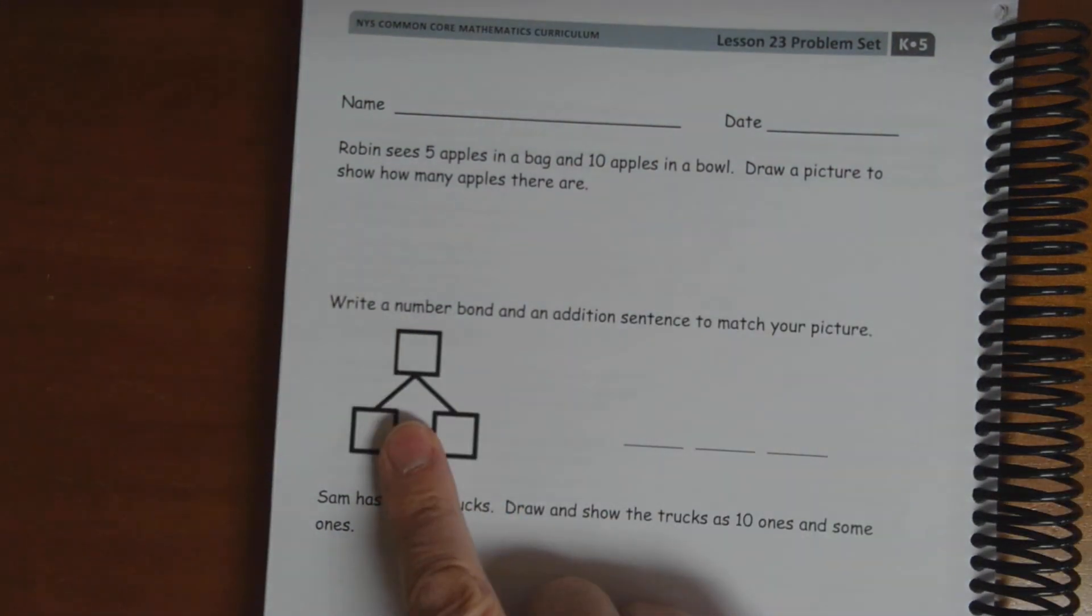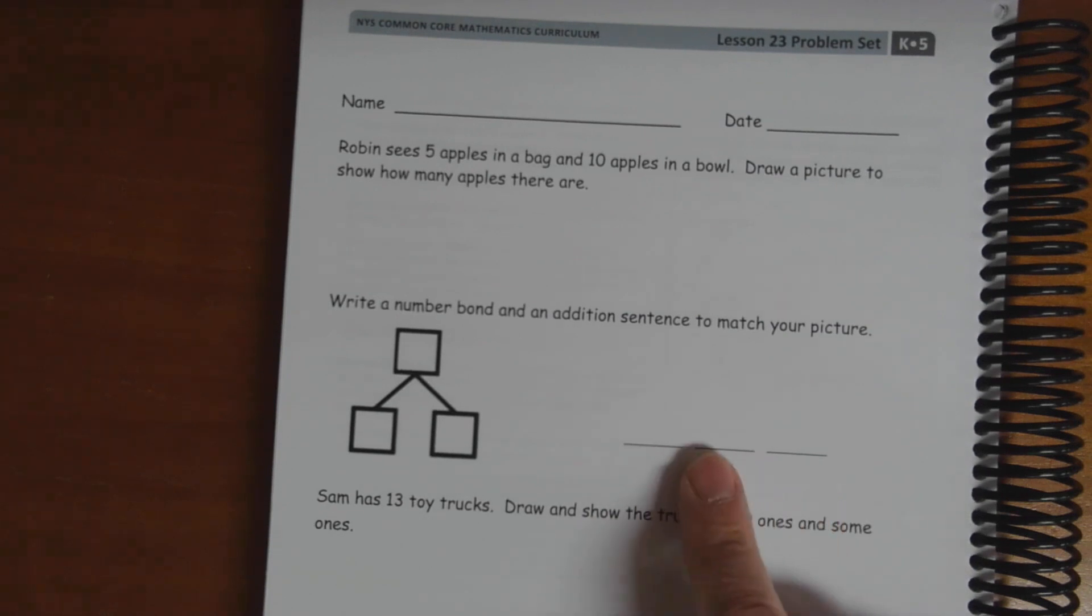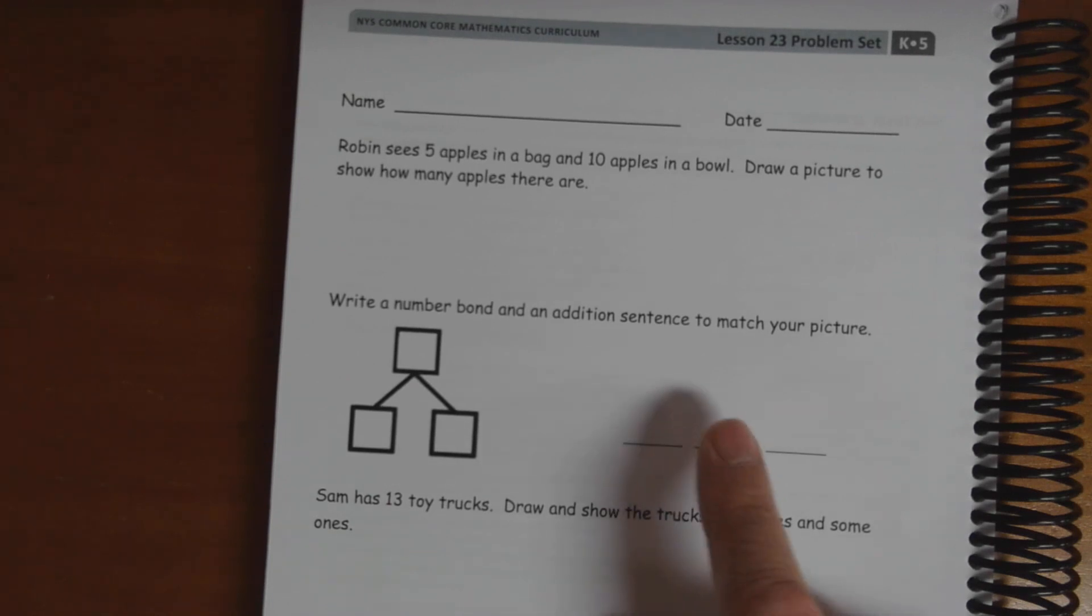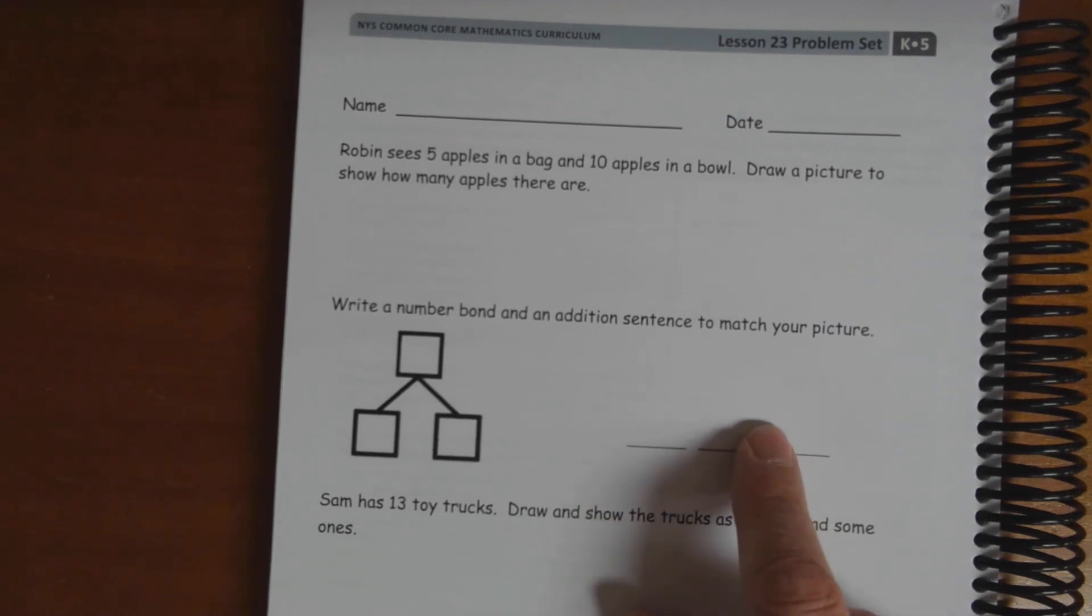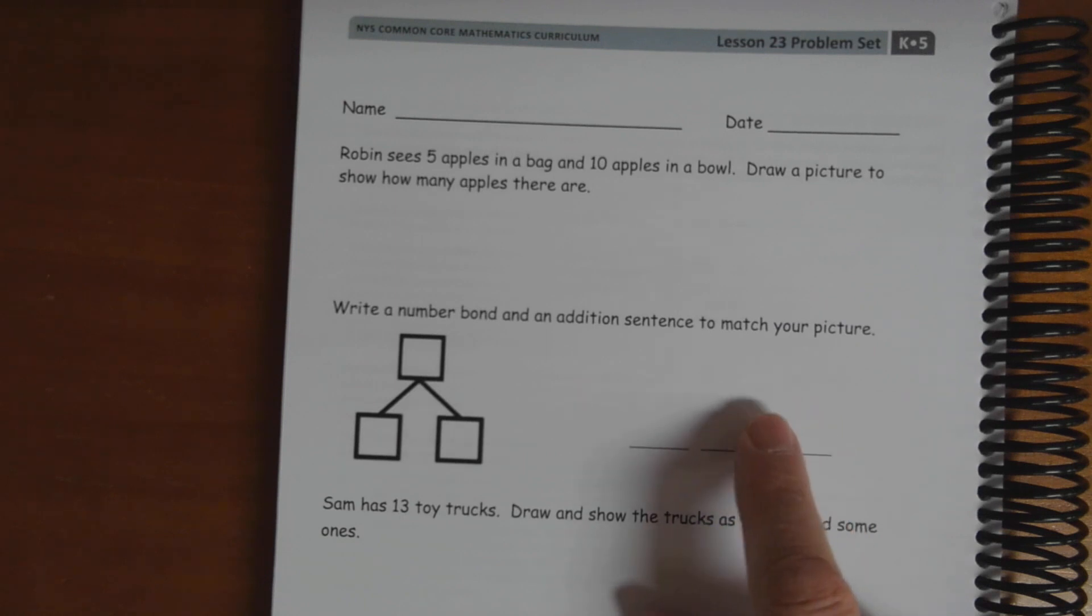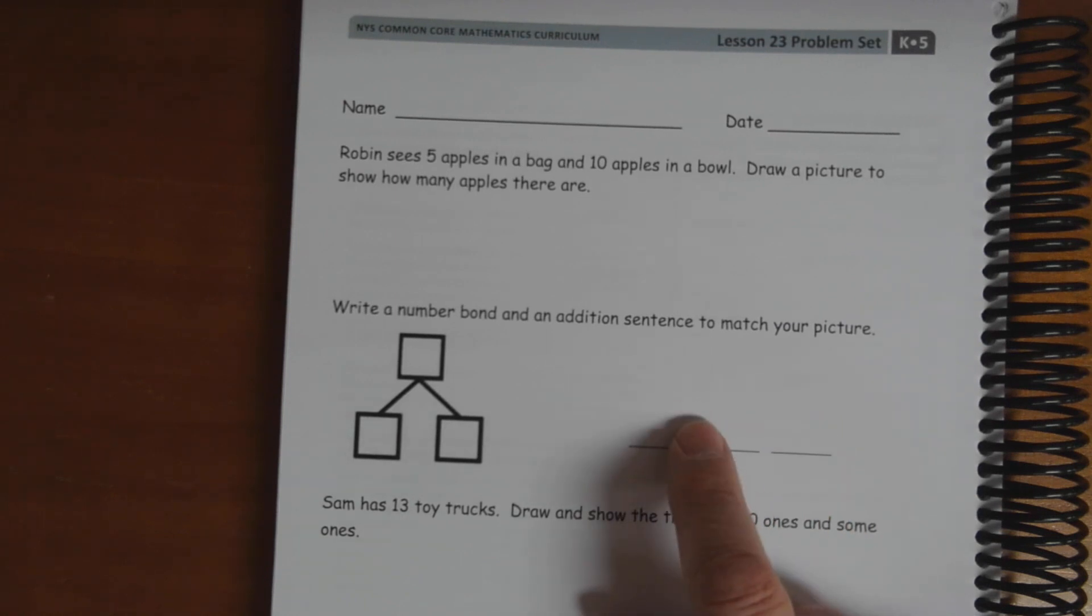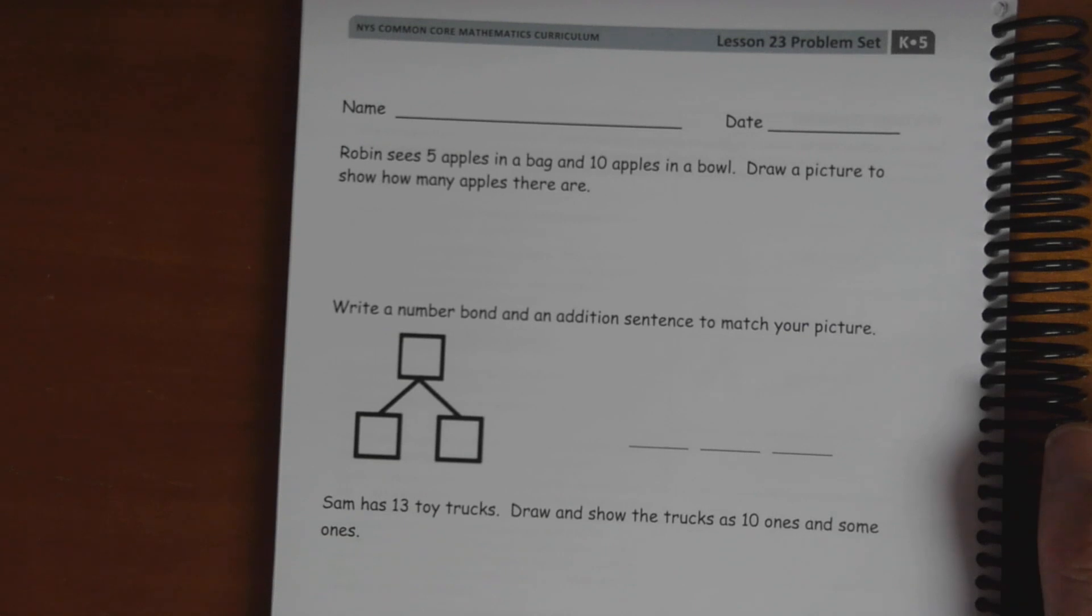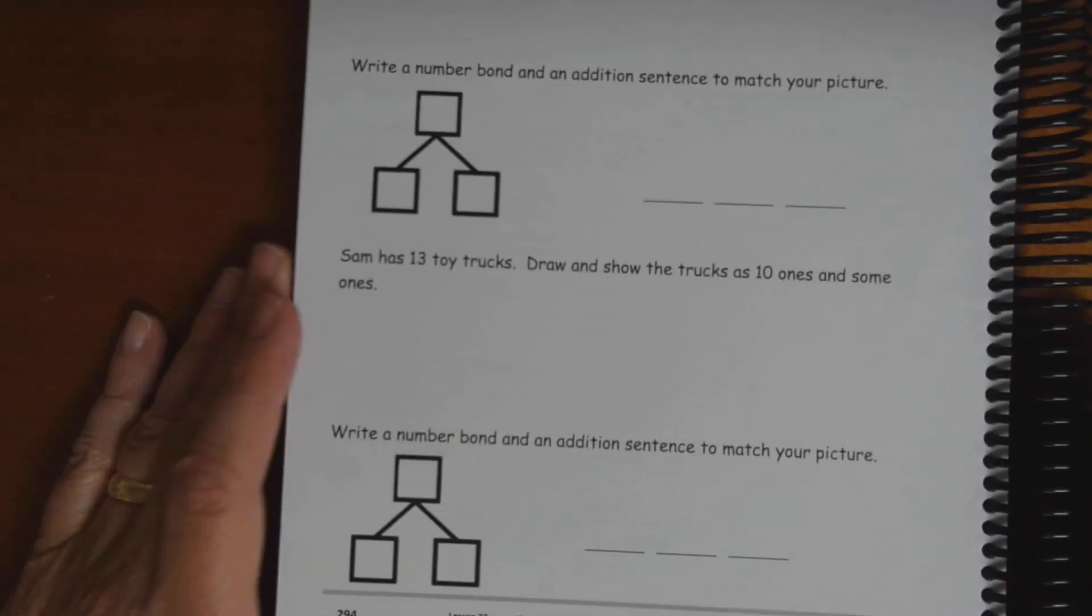And then you've got a number bond to write about that and your number sentence. Notice that there's no equal sign or plus sign here. So, you're going to have to write your equal sign and your plus sign. I think they did that because some people might want to write their whole here and then the equal sign and put the plus here. Or some people are going to want to write their whole here and put the equal sign there and have the two parts with the plus sign between them there.